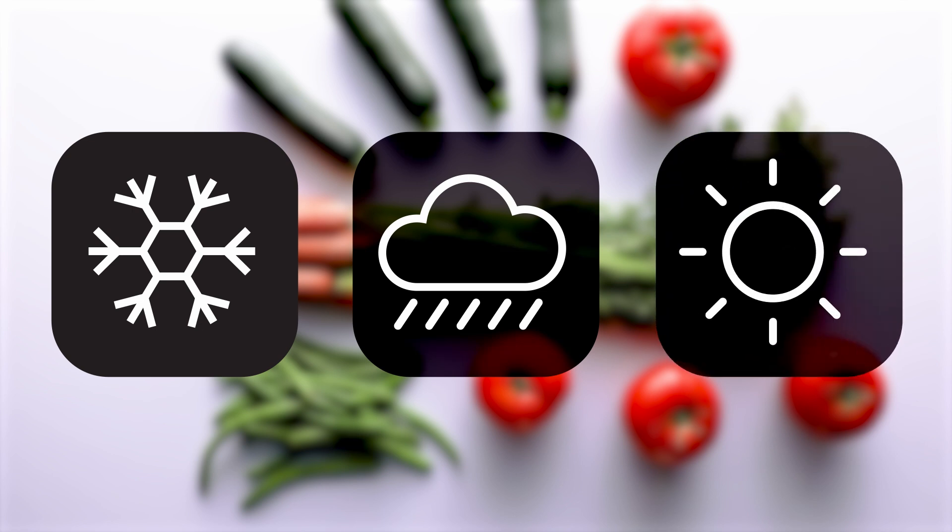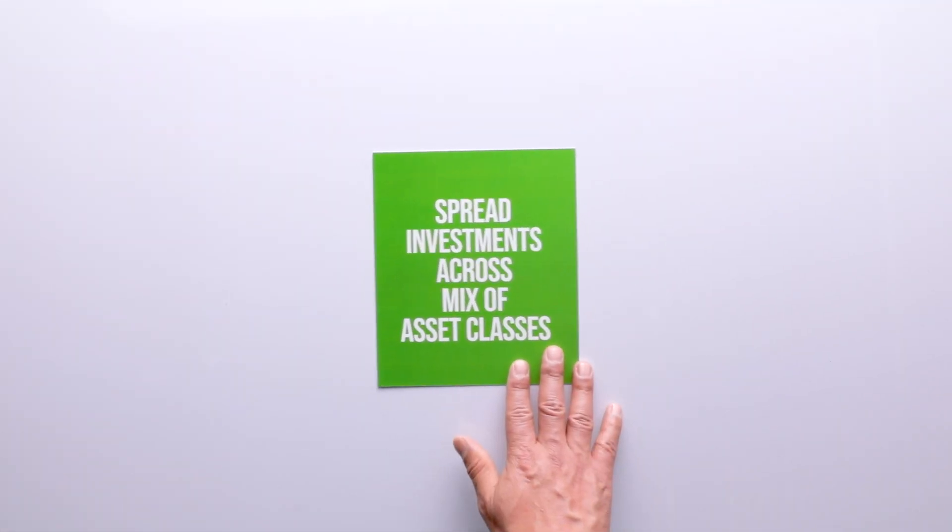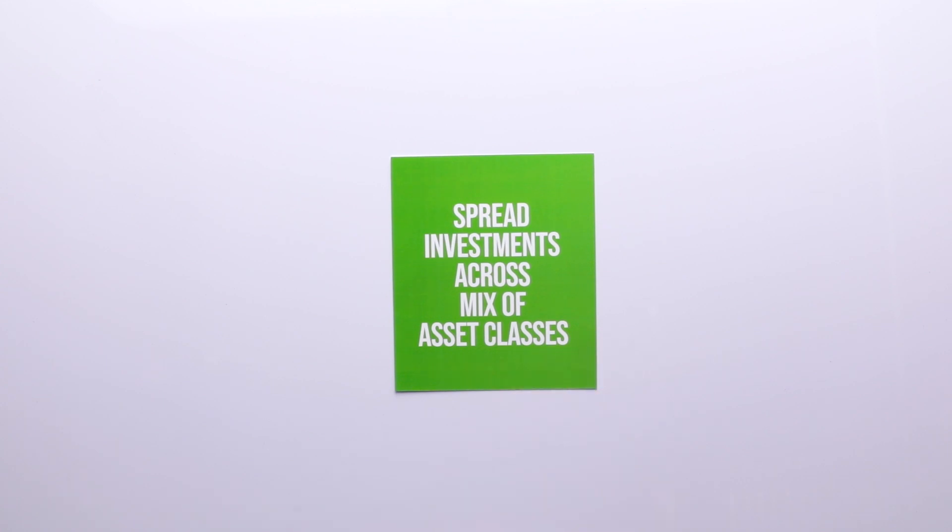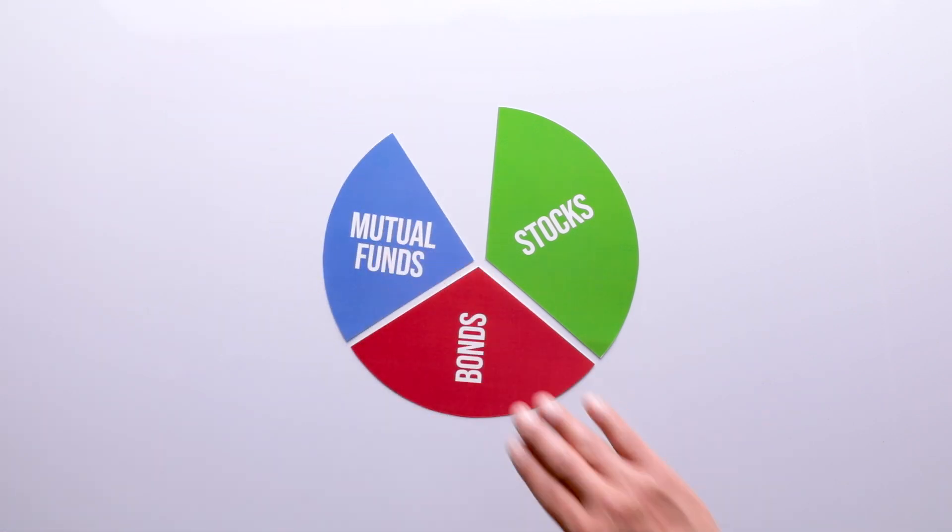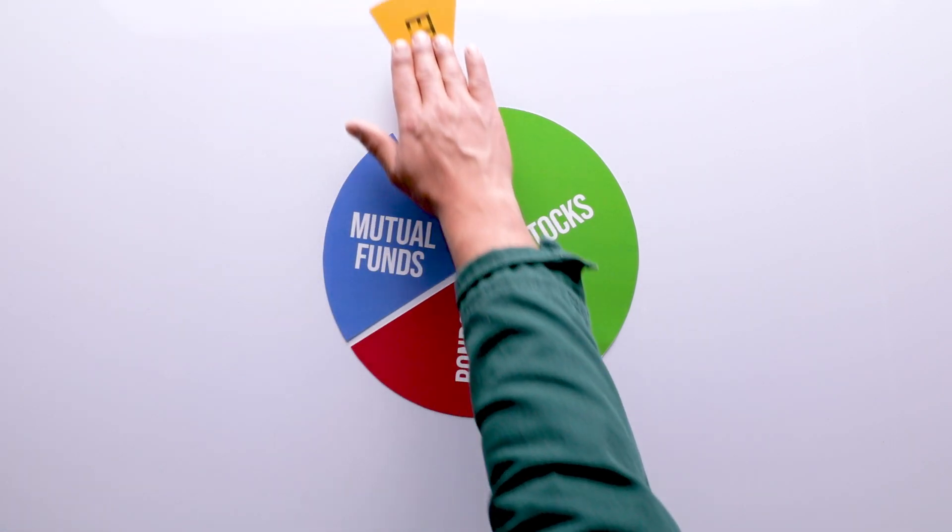There are lots of ways to diversify your investment portfolio. One: spread investments across a mix of asset classes like stocks, bonds, mutual funds, and exchange traded funds or ETFs. Don't worry, we'll cover these in a later video.